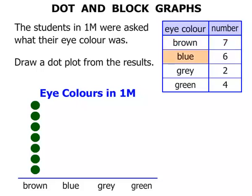Now for blue eyes there were six students: one, two, three, four, five, six. Six dots represent six students. For grey there were two students who had grey eyes: one, two.